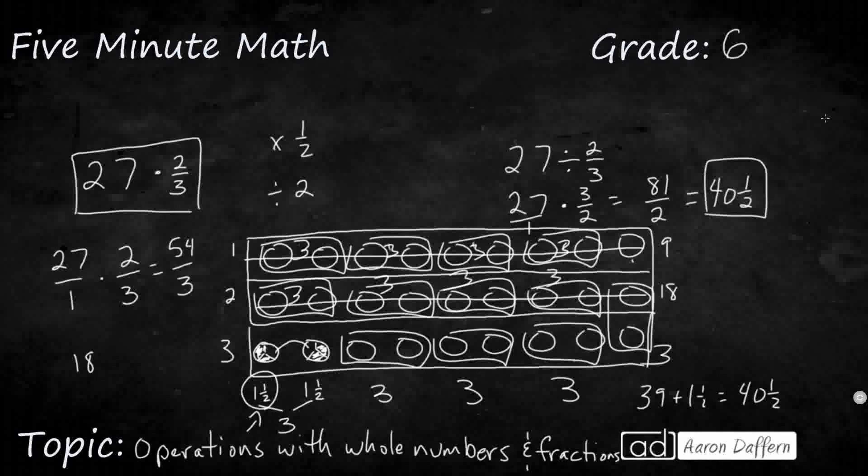So that's what we did right here. So it's the same thing, that's with pictures and without pictures. So when you're multiplying by a fraction, you just turn the whole number into a fraction, multiply straight across. When you divide by a fraction, you can flip it, and then multiply it by the reciprocal.